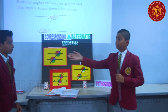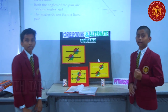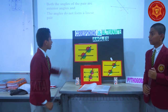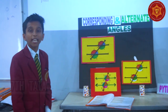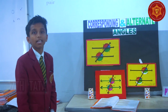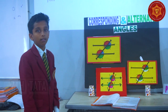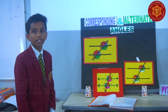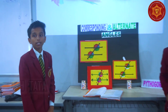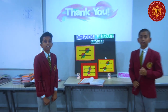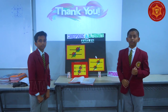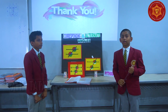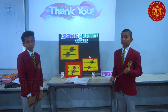Corresponding angles are those which lie on the same side of the transversal. Here, angles one and five are corresponding angles, and angles three and six are corresponding angles. Alternate angles are the angles which lie between the transversal.